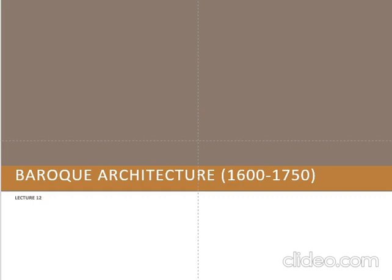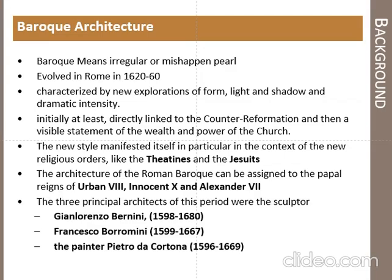In this type of architecture style, the facades of churches were made like a stage of a theater, with dramatic lighting and the use of colors. Baroque literally means irregular, or it is sometimes deciphered as misshapen pearl.